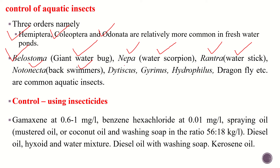Order Coleoptera includes Dytiscus, Gyrinus, Hydrophilus, Dragonfly, etc. All these types of insects are common in fish farms, along with aquatic insects belonging to order Odonata. These different types of aquatic insects can harm the fry of the fishes.